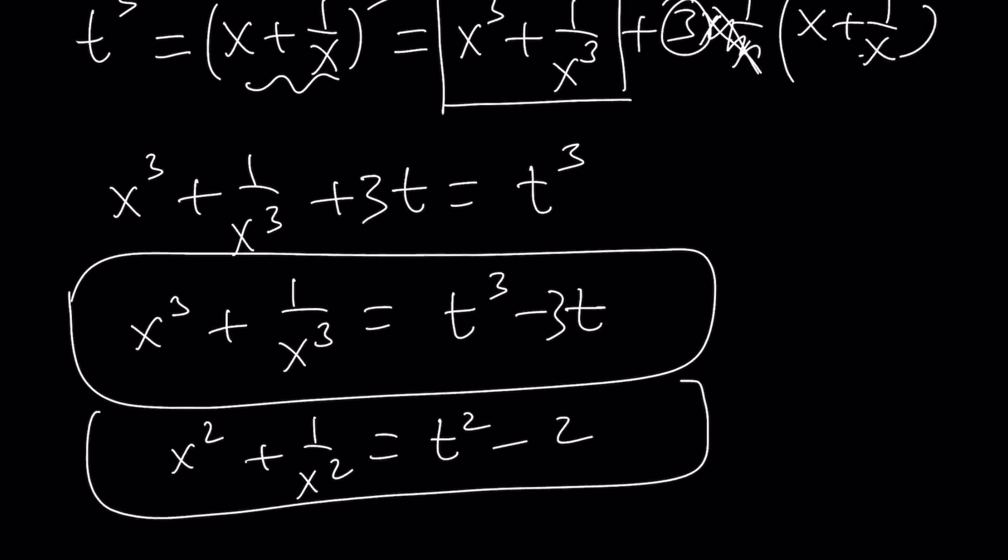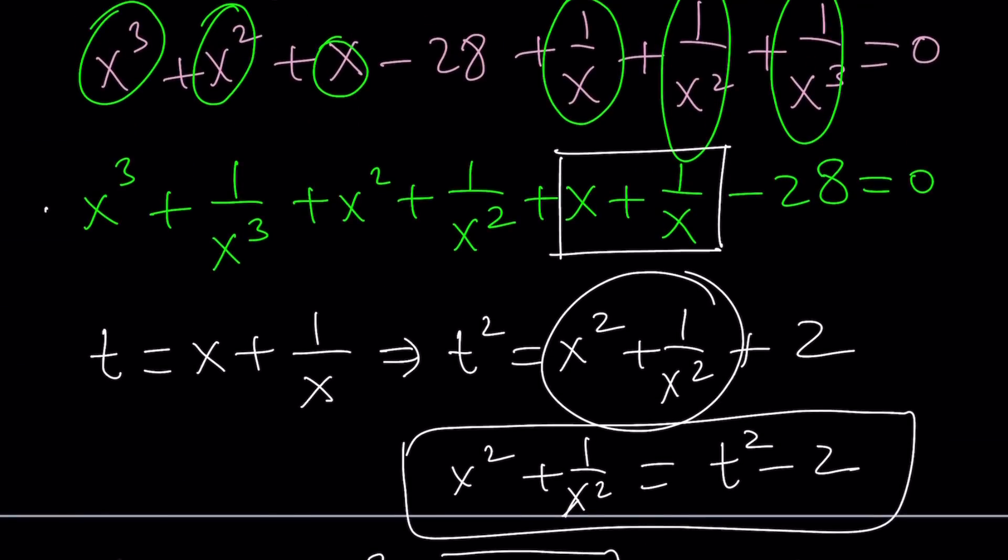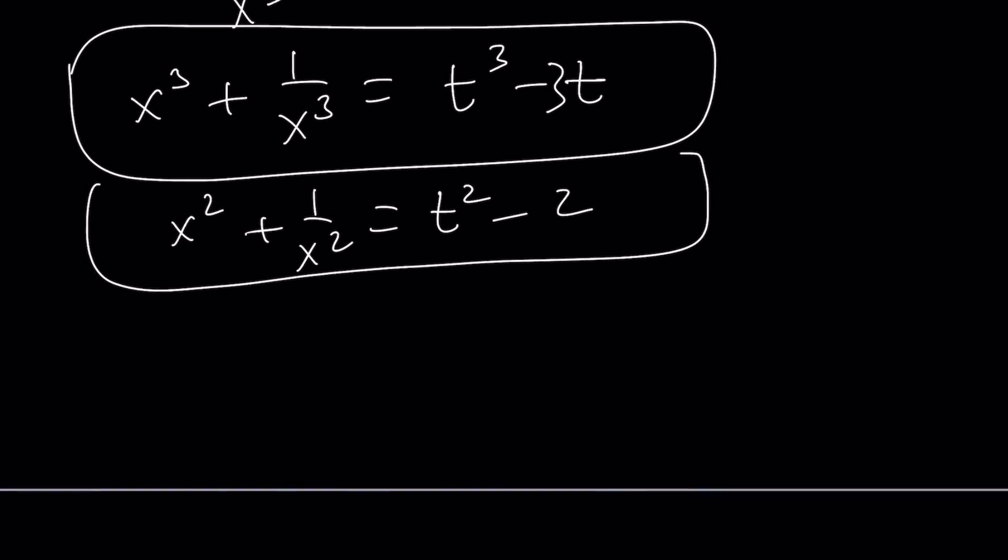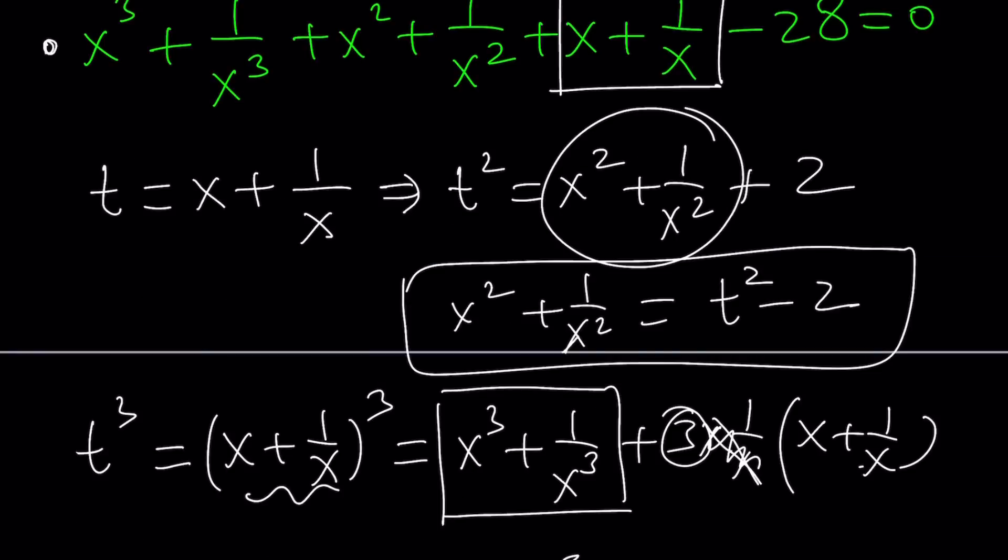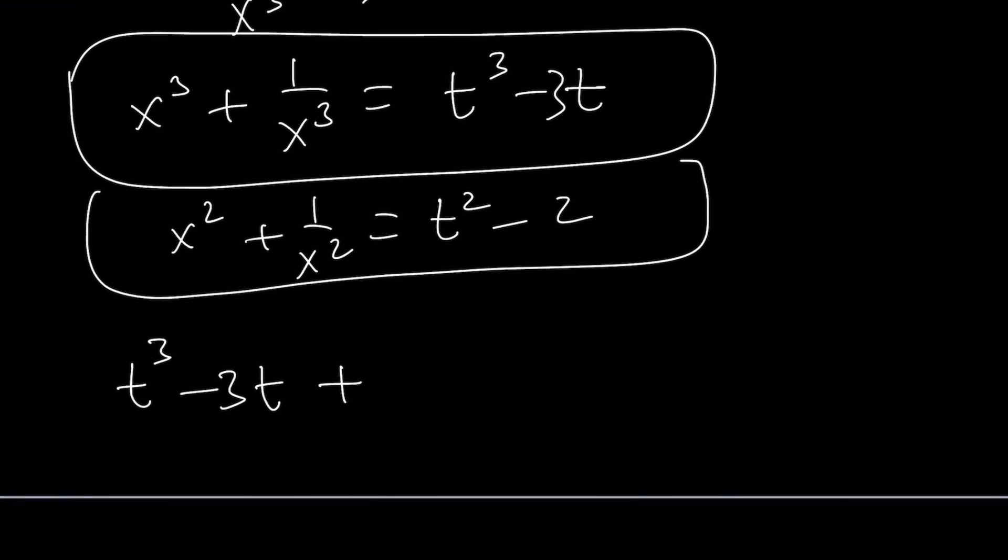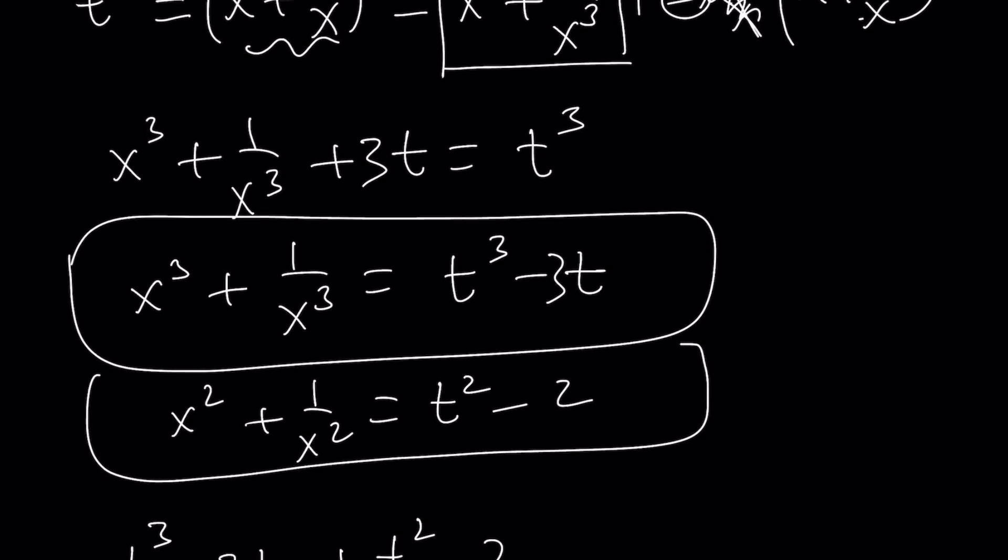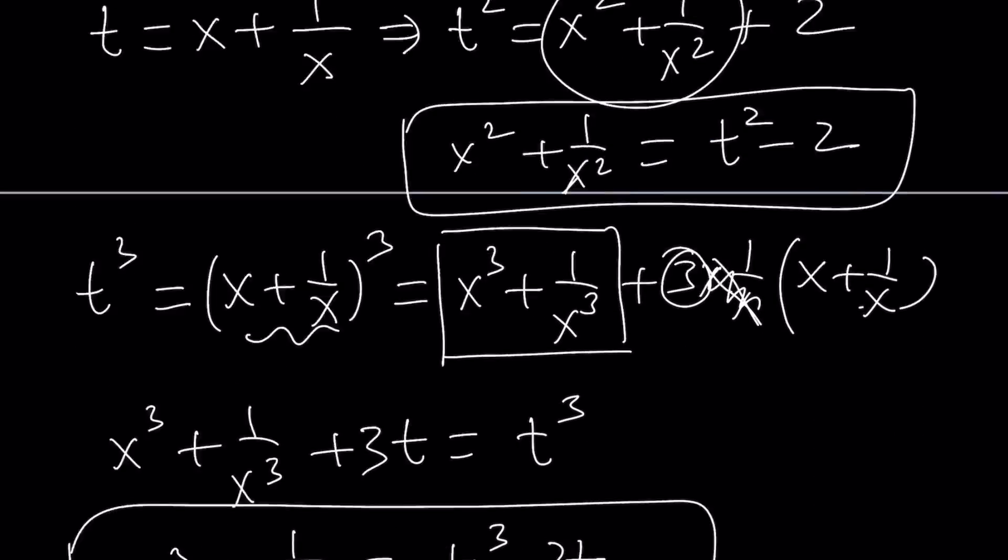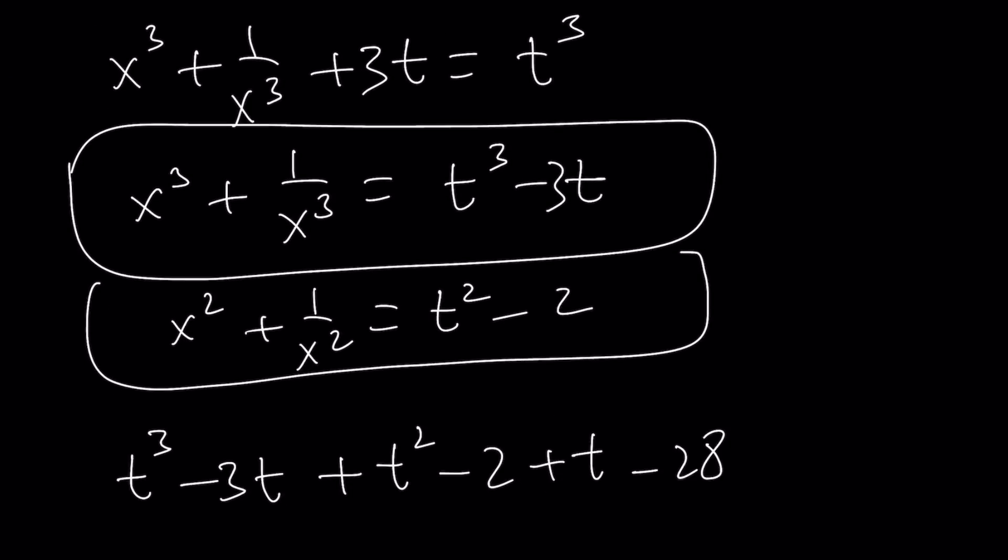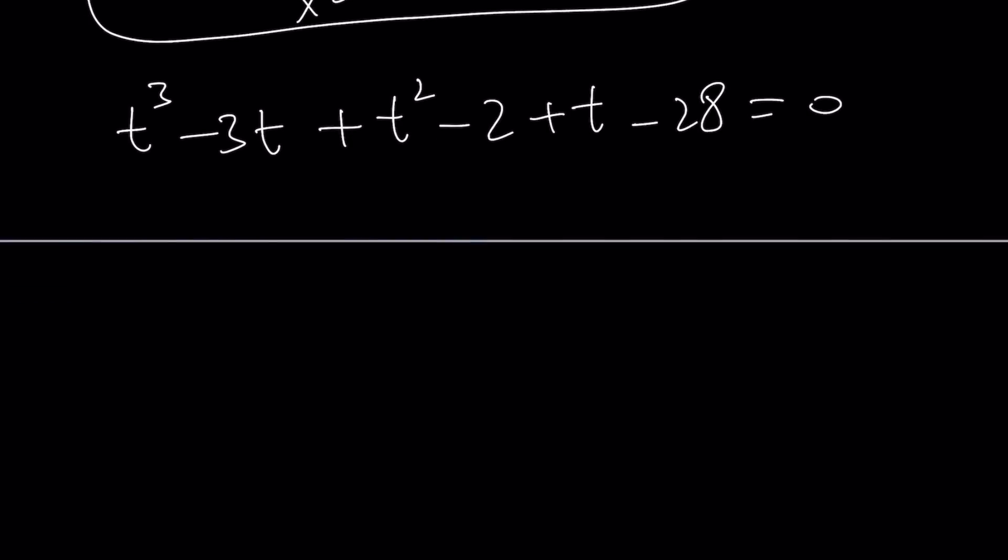Now, let's go ahead and plug these in here. So I have x cubed plus 1 over x cubed, which is t cubed minus 3t. And then I have x squared plus 1 over x squared, which is t squared minus 2. And then I have x plus 1 over x, which is t itself. And that's equal to 28, or minus 28 equals 0. Great. Now, this equation is obviously much, much better than hexic, because it is cubic. And cubic equations can be solved. There's a formula, but you can also sometimes guess and check, or use rational root theorem.